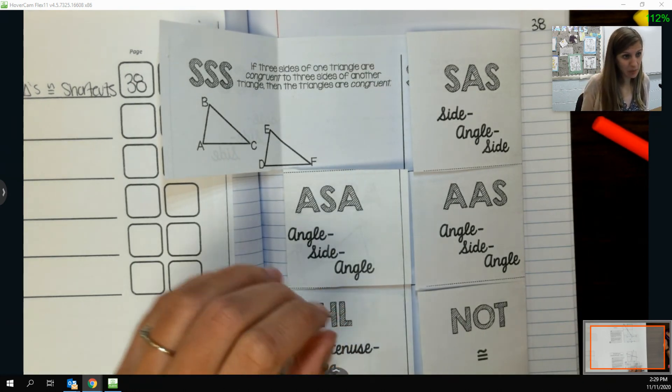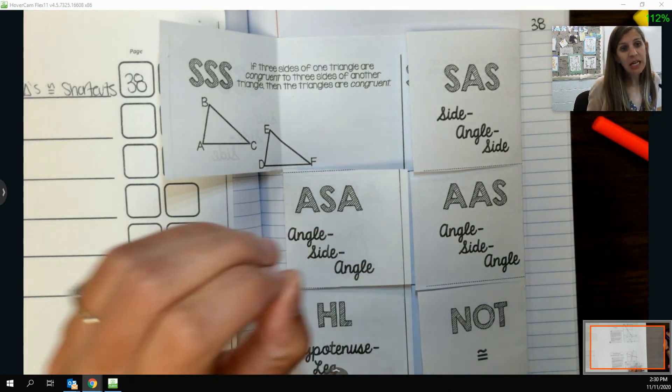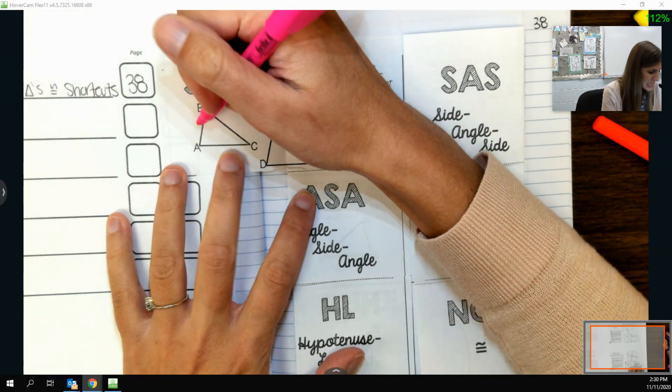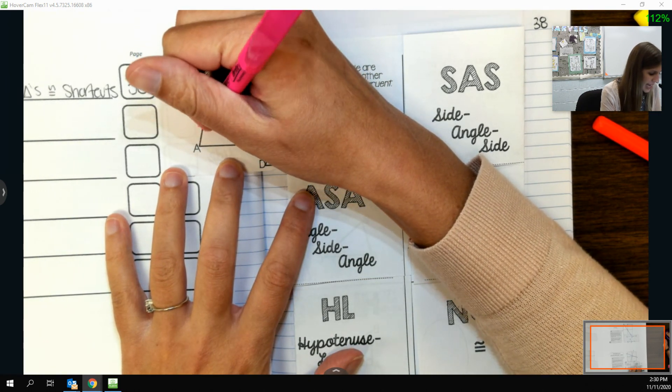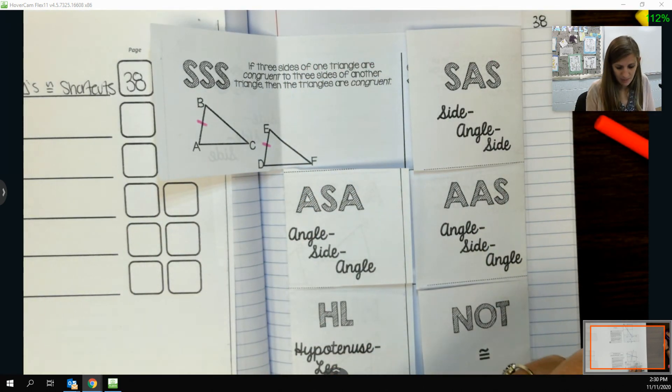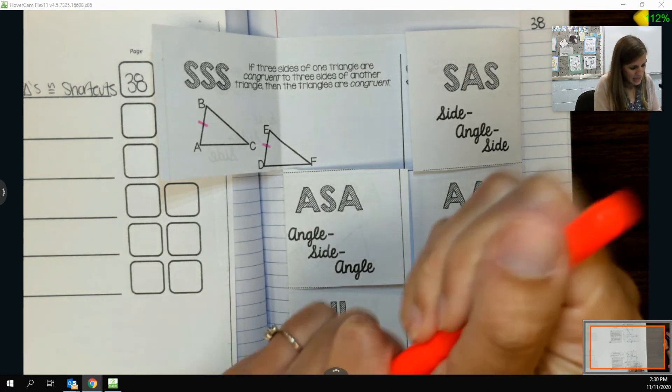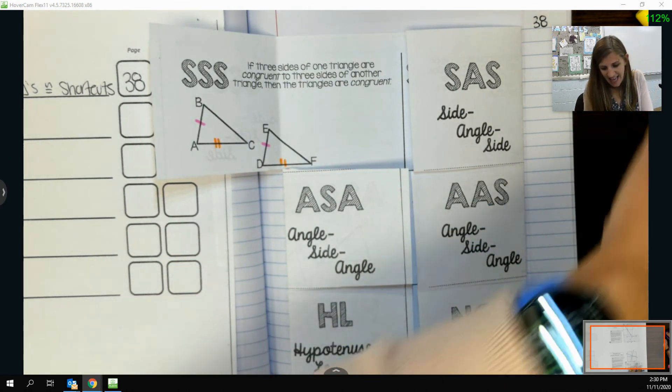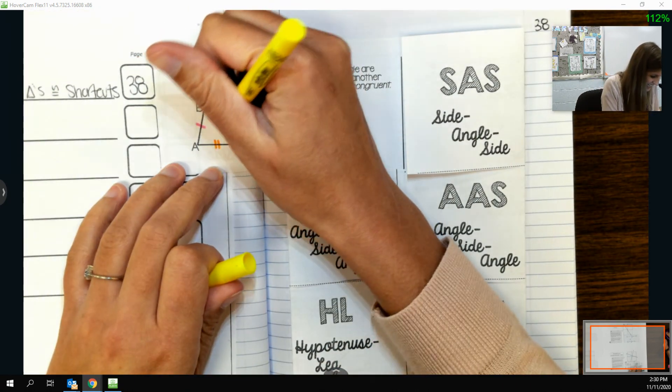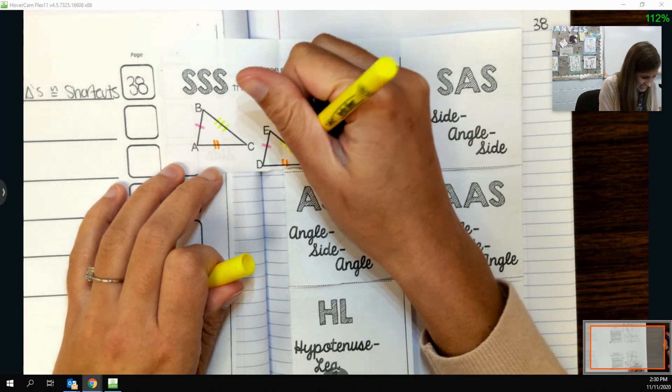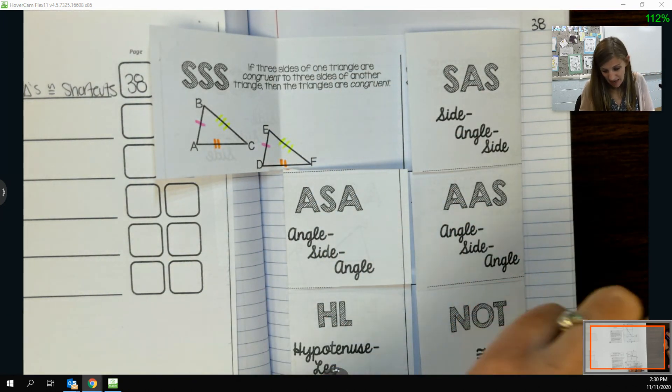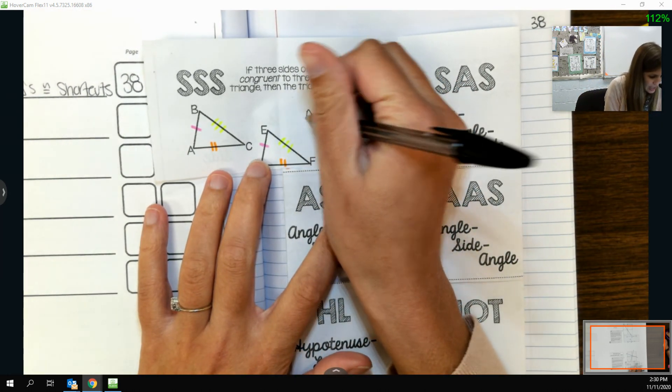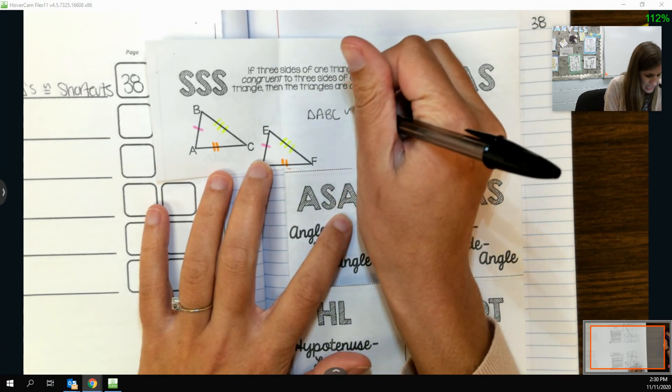The thing that I'm going to stress a lot in this chapter is that you need to mark your picture with tick marks or rainbows. To show that three sides are congruent, I would need to see on my picture that one side was congruent to one, a second was congruent to a second, and then a third was congruent to a third. If I saw that in my picture, then that would be enough for me to say that triangle ABC is congruent to...